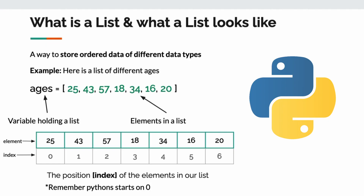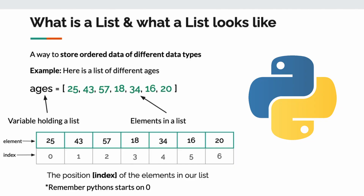Here's the example I've put together. Remember, a list is mutable. It's a way to store data in different types. Here's an example of a list called ages. I'm using the square brackets, and inside I have a bunch of numbers — these are elements in my list. Python starts on zero, so technically the number 25 is at index zero. I have seven elements, but Python is going to interpret that as six because we start on zero.